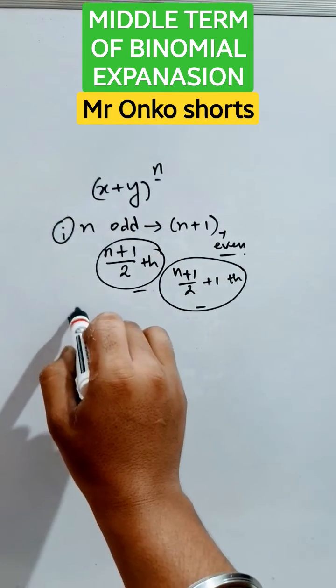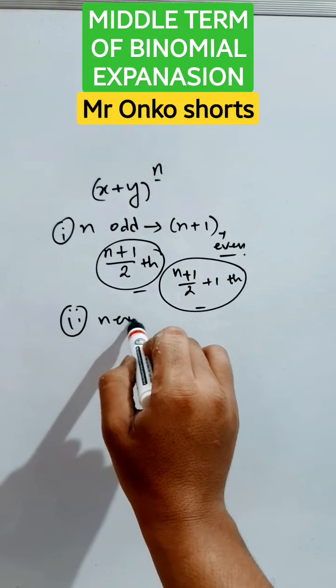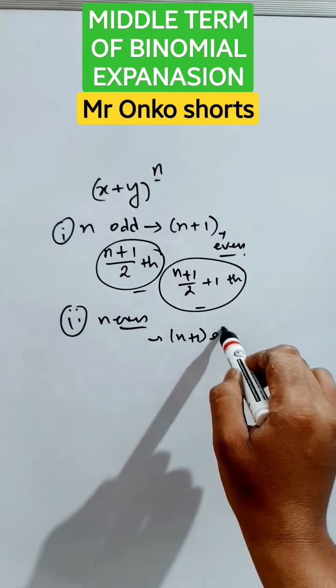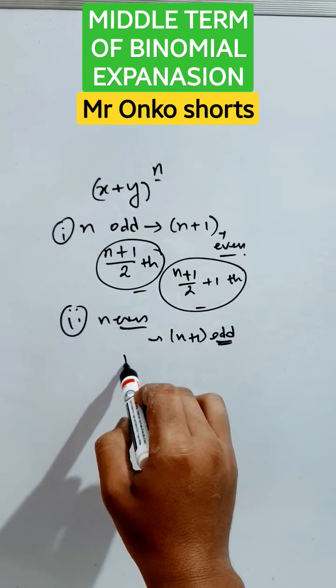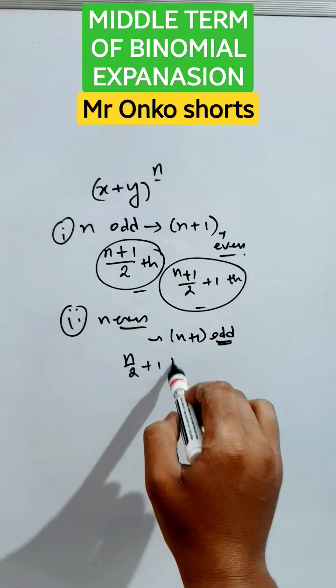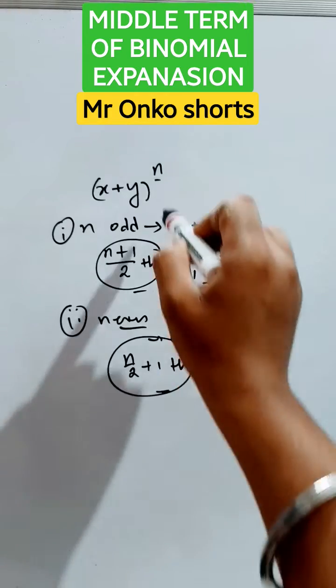And if in the second case, that is n is even, then n + 1, the number of terms is odd actually. So here n/2 + 1 eth term will be the middle term of the given expansion.